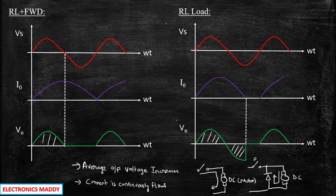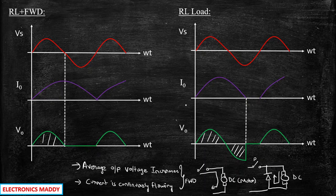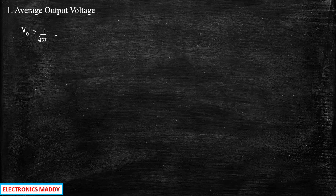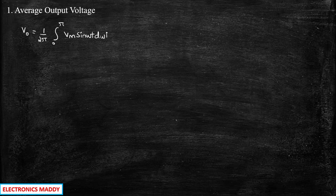These are very important points — the freewheeling diode improves the system performance. Now let's look at some important parameters for the analysis. The first and most important parameter is the average output voltage. Vout average is given as (1/2π) times the integration from 0 to π of Vm sin(ωt) d(ωt). The limit 0 to π is used because the average output voltage is available only till π.